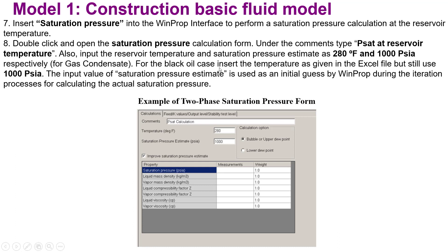For black oil, the reservoir temperature would be different. The input value of saturation pressure estimate is used as an initial guess by WinProp during the iteration process for calculating the actual saturation pressure. This is an example of a two-phase saturation pressure form you will see in the WinProp software. There are two options in the calculation option that I discussed before.